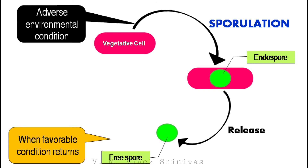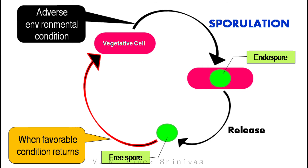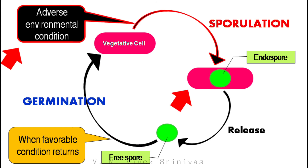When favorable conditions return, the spore germinates to form the vegetative cell back. The process by which the endospore reverts back to the vegetative cell is called germination. So sporulation helps in the survival of the bacteria during adverse environmental conditions.